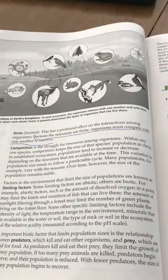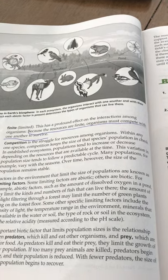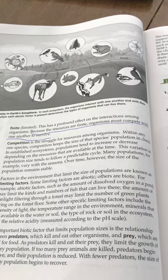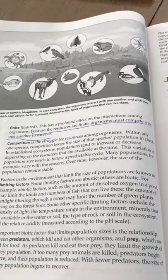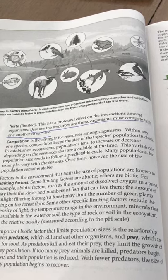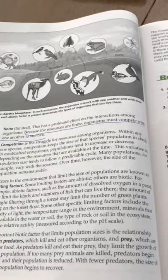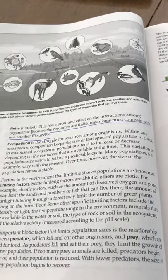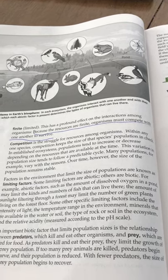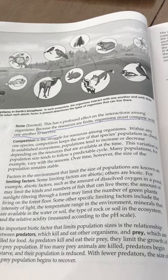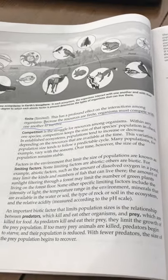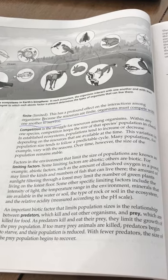Competition is the struggle for resources among organisms. Within any one species, competition keeps the size of that species' population in check. In established ecosystems, populations tend to increase or decrease depending on the resources that are available at the time. This variation in population size tends to follow a predictable cycle. Many populations vary with the seasons. Over time, however, the size of the population remains stable. Factors in the environment that limit the size of populations are known as limiting factors.